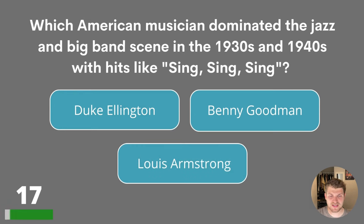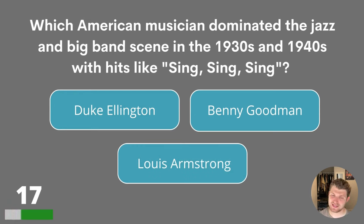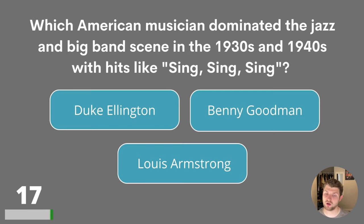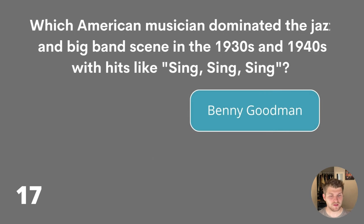Question seventeen. Which American musician dominated the jazz and big band scene in the 1930s and 1940s with hits like Sing Sing Sing? Is it Duke Ellington, Benny Goodman or Louis Armstrong? The answer is Benny Goodman.